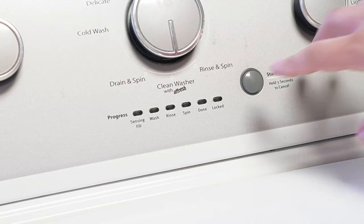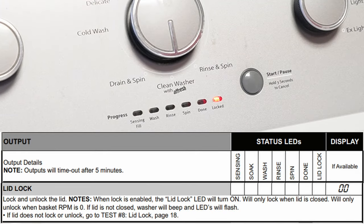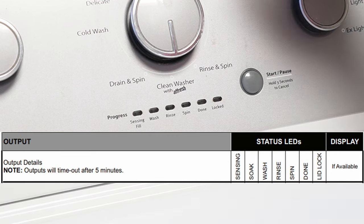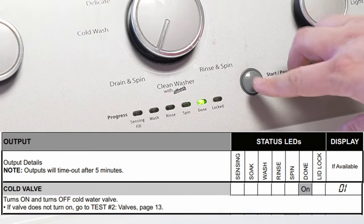With no lights illuminated, we can begin our tests starting with the lid lock test. Let's go through the tests one by one on this Whirlpool washing machine without any commentary, just the modes.